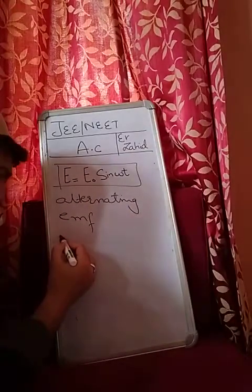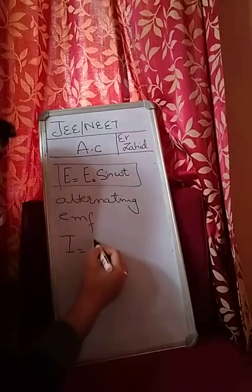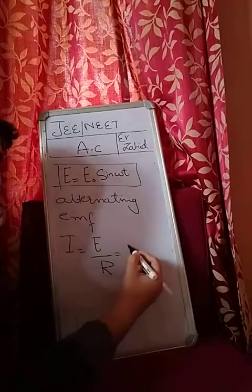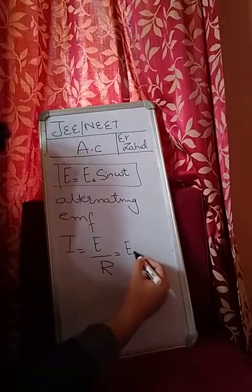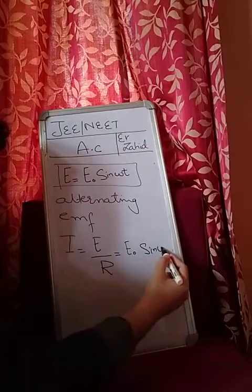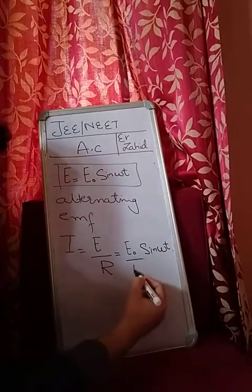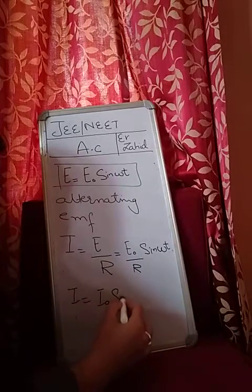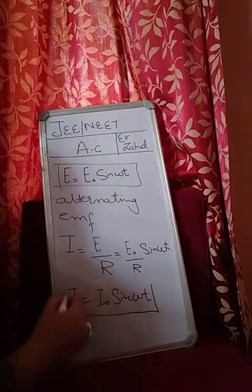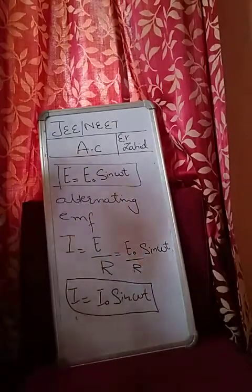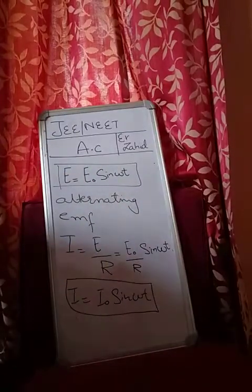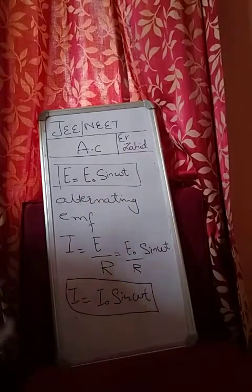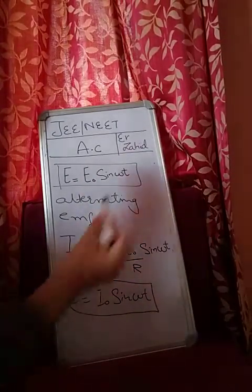If you see the current, you can write I is equal to E by R, where R is the resistance. It will be E naught sine omega t divided by R, so I becomes I naught sine omega t. This is the alternating EMF expression, this is the alternating current expression.